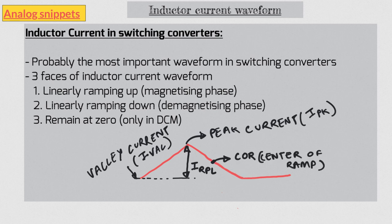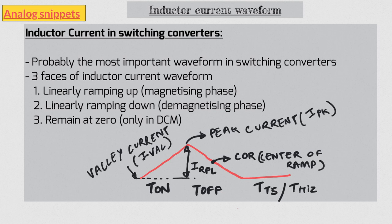In steady state, the center of ramp is the same during the ramping up phase and the ramping down phase. The center of ramp is also the average value of the inductor current waveform in CCM operation. The ramping up phase is known as T-on, the ramping down phase is known as T-off, and the zero-current phase is known as T-tri-state, sometimes also called T-high-Z, because during this phase both switches are off or in a high-Z state.